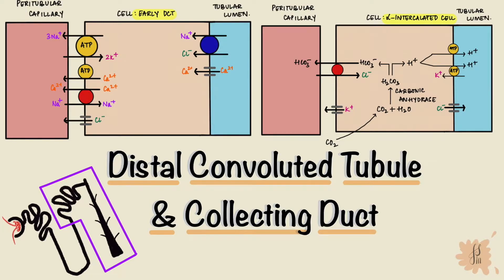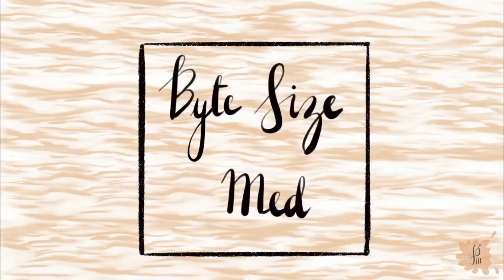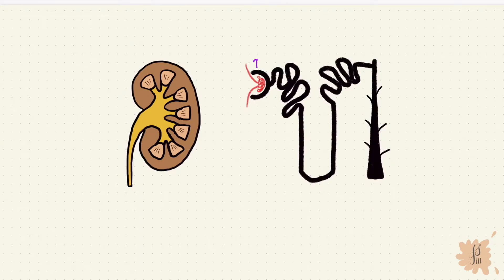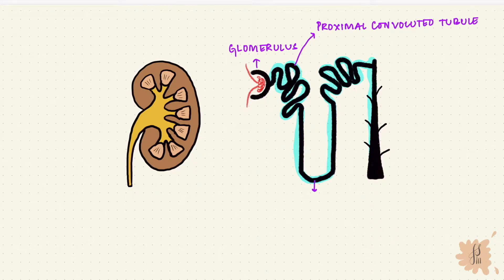Hi everyone, welcome to Bite Size Med where we talk about quick bite-size concepts in medicine for study and rapid review. This video is on the distal convoluted tubule and the collecting duct. The kidney has millions of nephrons and each nephron has a glomerulus and a renal tubule. The first part of the renal tubule is the proximal convoluted tubule, which then leads into the loop of Henle, the distal convoluted tubule, and finally the collecting duct.